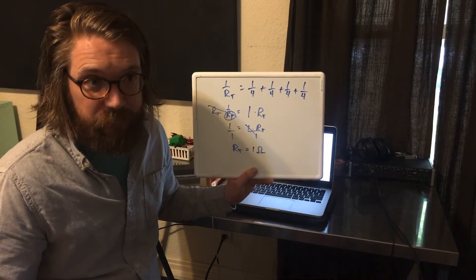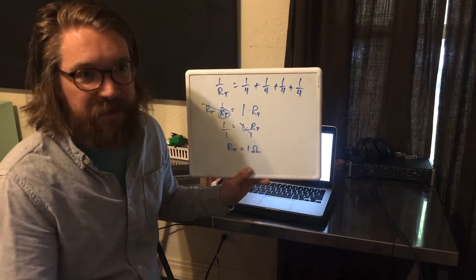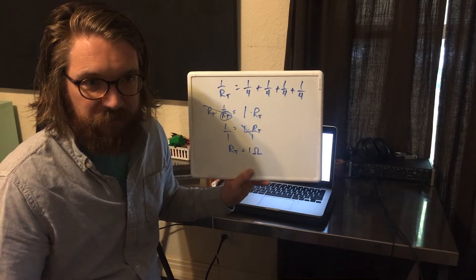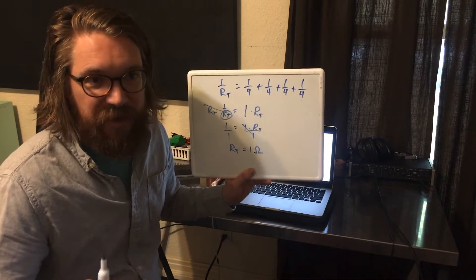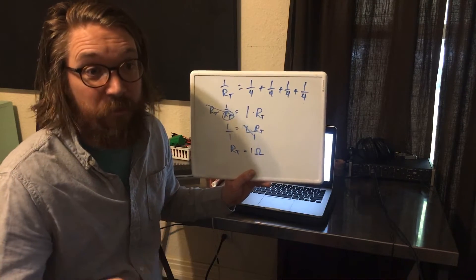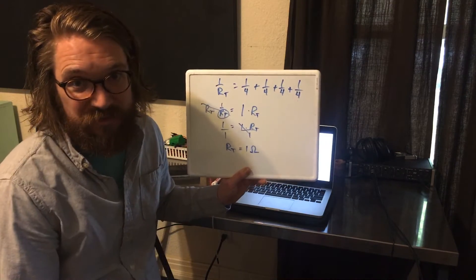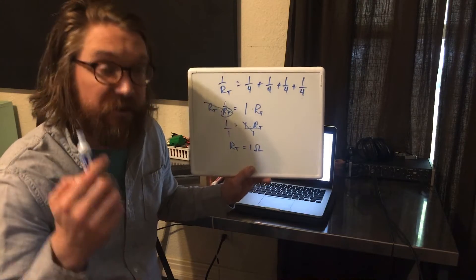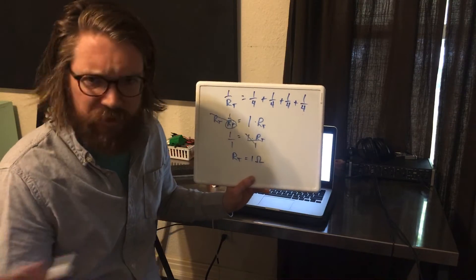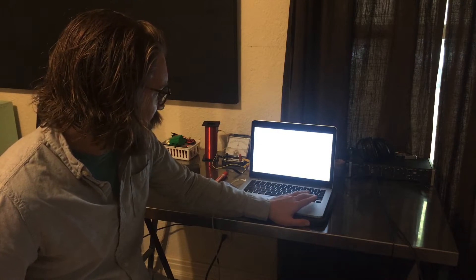This is why it's very important to know whether something is wired in series or parallel. If it's in parallel, adding more resistors actually decreases the total resistance and increases the total current — you're making them go faster. Anyway, let's look at some examples.